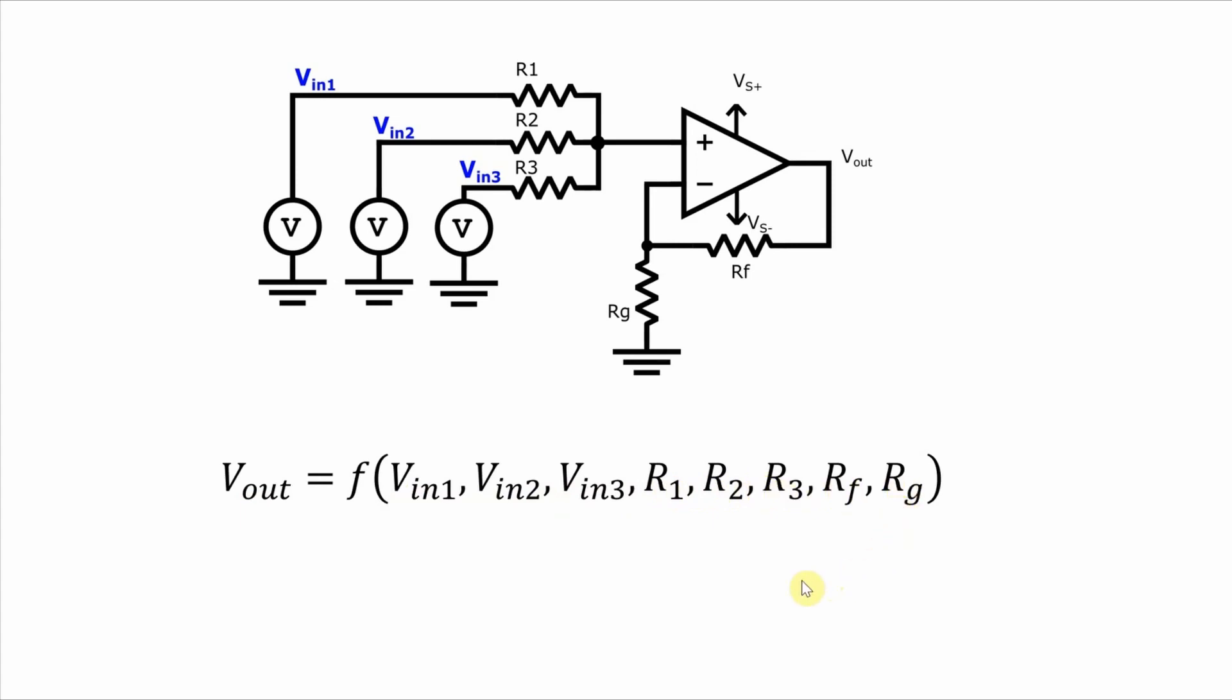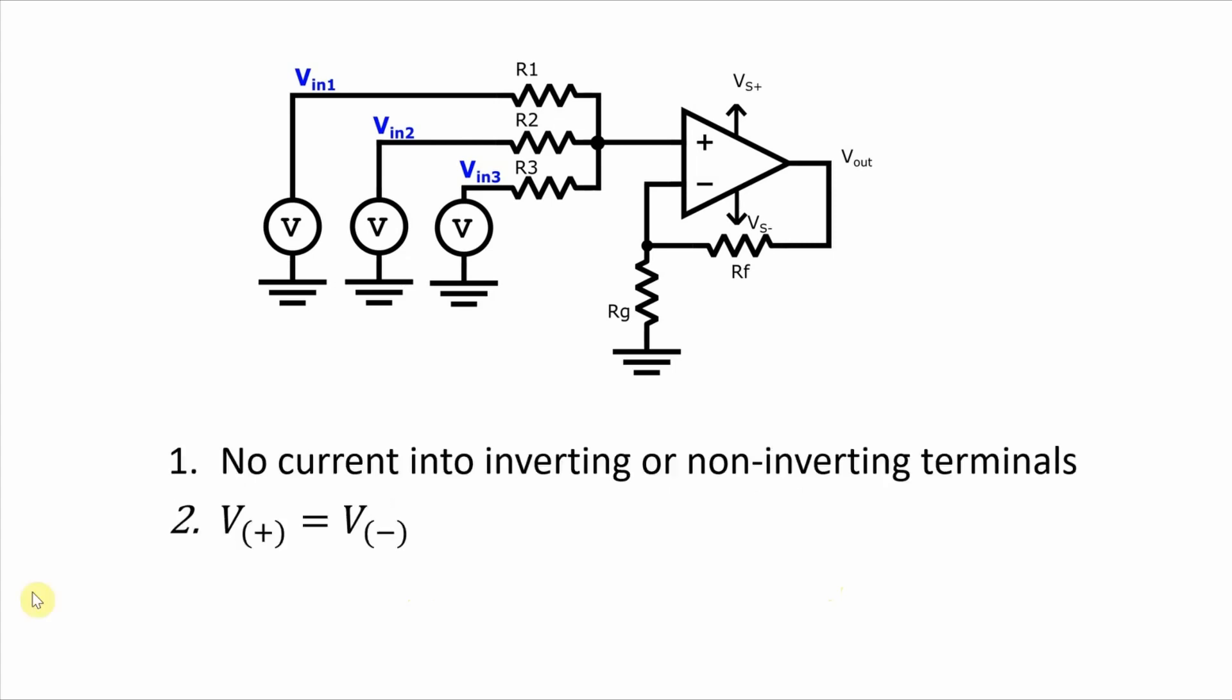And when we do this, we are going to assume that the op-amp is an ideal one. So that means that no current flows into either the non-inverting or the inverting terminal. And since the open-loop voltage gain is infinite, and we have negative feedback in the circuit, the voltage at the inverting terminal will be driven to be equal to the voltage at the non-inverting terminal.